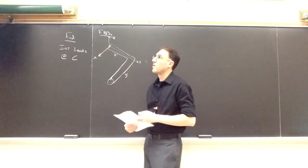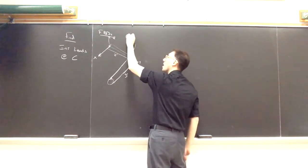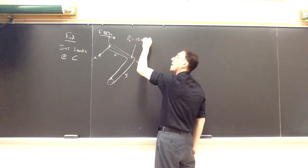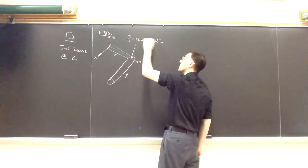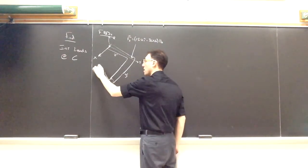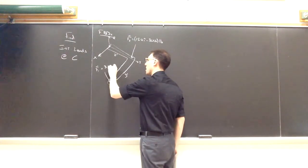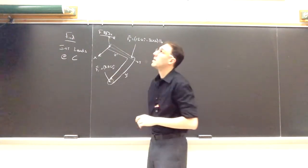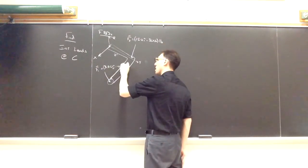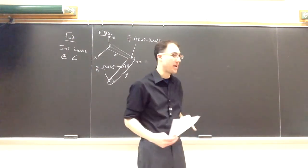I have those two external forces, F2, which I'm told its value is 150i minus 300k pounds. And F1, 350j minus 400k pounds.